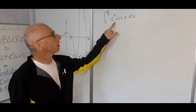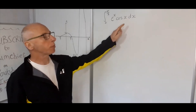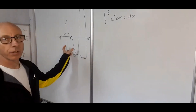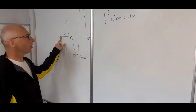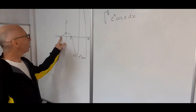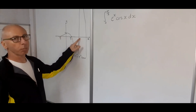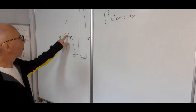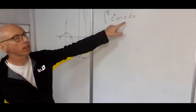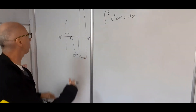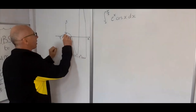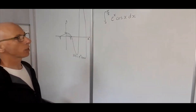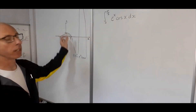We are going to try and integrate the function e to the x cosine x with respect to x from zero to pi over two. I have drawn a graph of this function here which crosses the x-axis at minus pi over two, pi over two, three pi over two and so on, and it will cross the y-axis at the point one. We want to calculate this integral from zero to pi over two — this shaded region here.